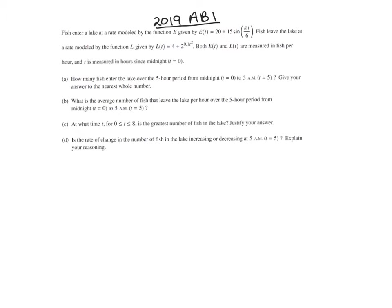We're given that fish enter a lake at a rate modeled by this function E, and fish leave the lake at a rate modeled by this function L. Notice that as soon as we see the word 'rate,' we think of derivatives. So E of T and L of T are both derivatives, and what gives it away is that the units are fish per hour, where T is measured in hours since midnight, which is time zero.